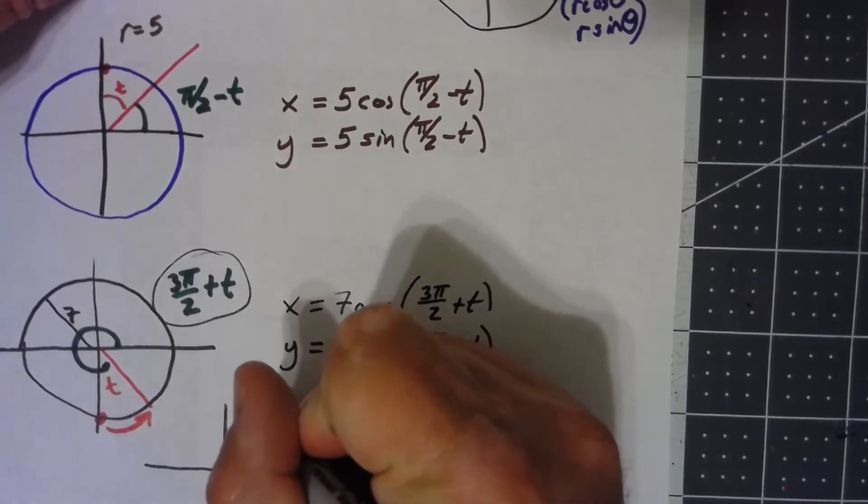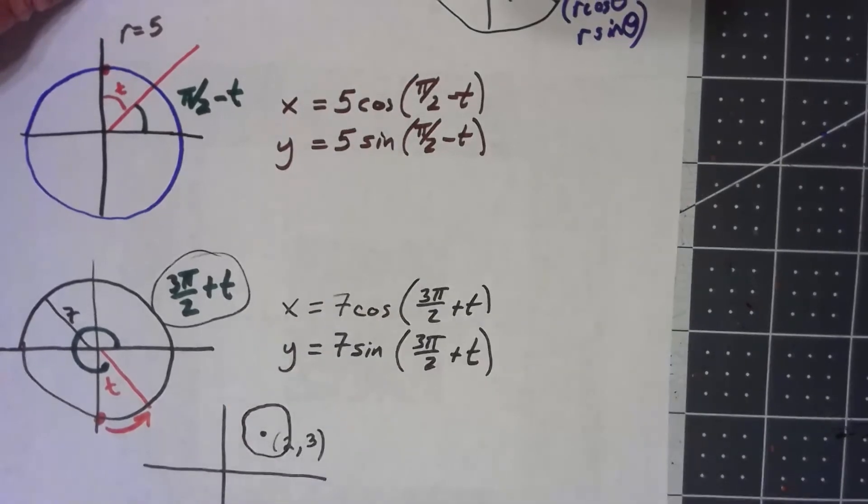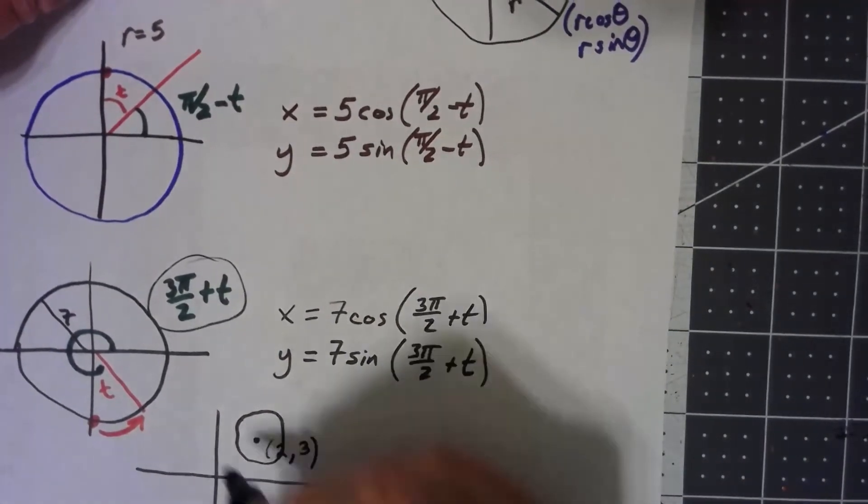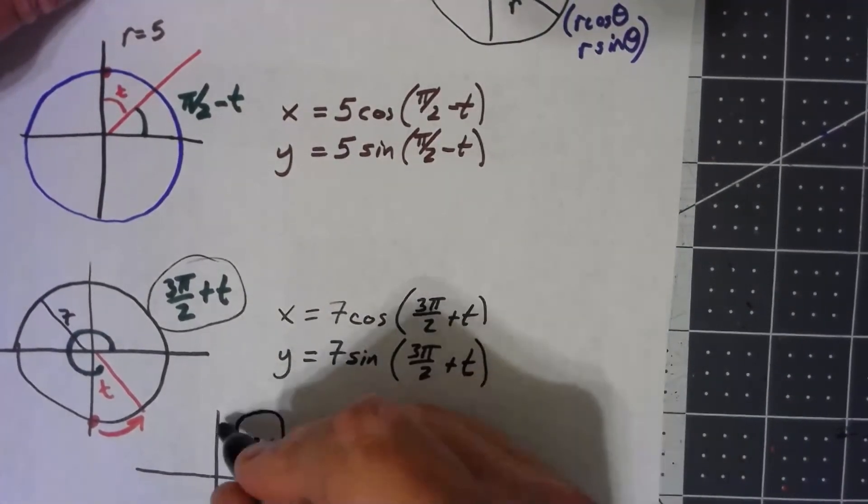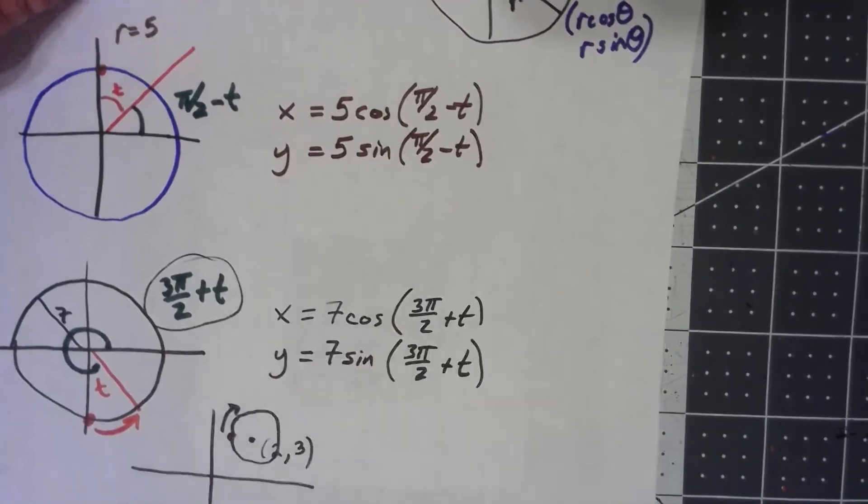Let's just make it a radius of 1 just to make it nice and easy. And how about I start over here and go counterclockwise.